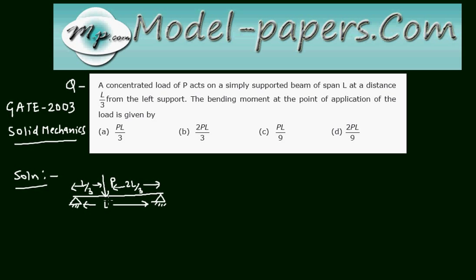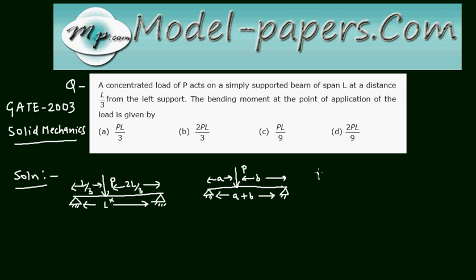We have to find the bending moment at the point of application of load P. Consider a simply supported beam with load P acting at distance a from the left support and b from the right support, with total length a + b.